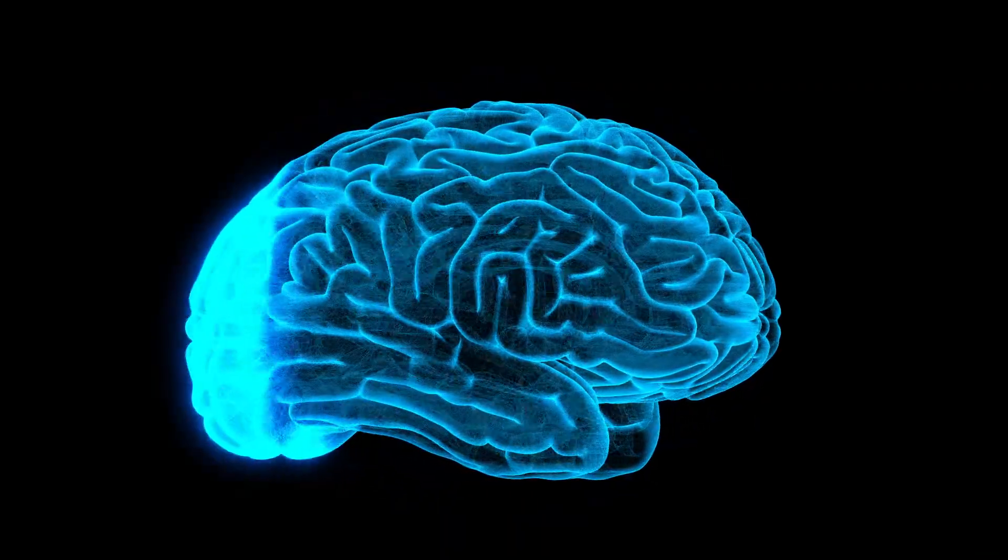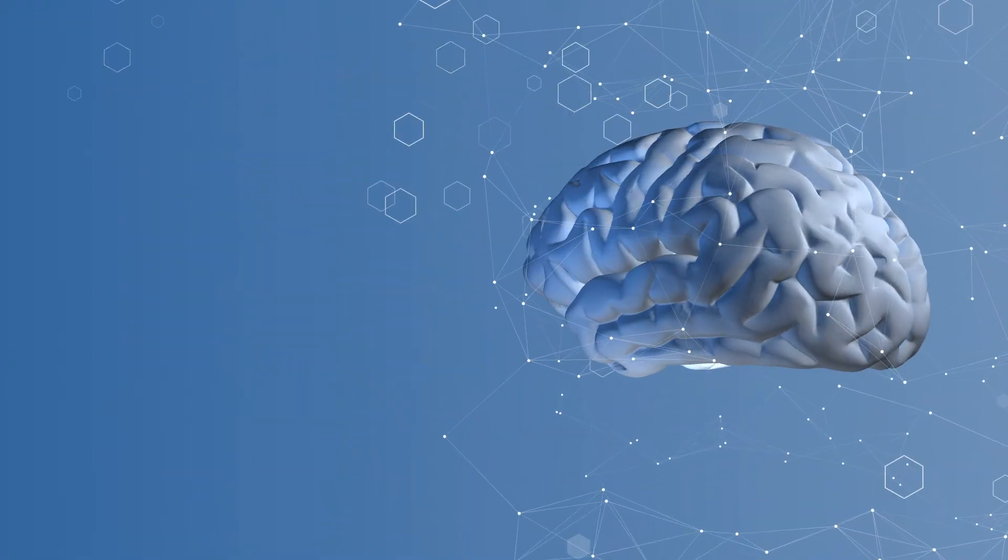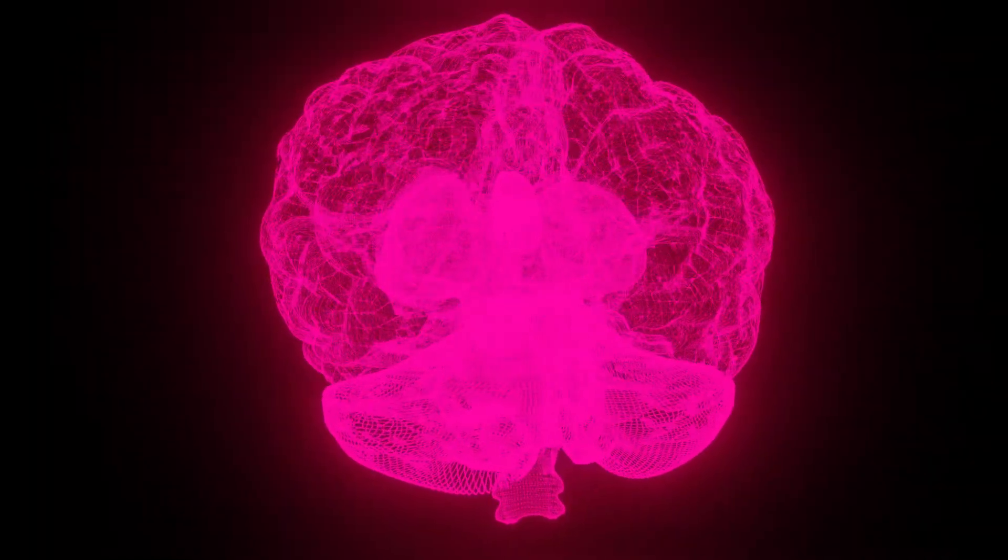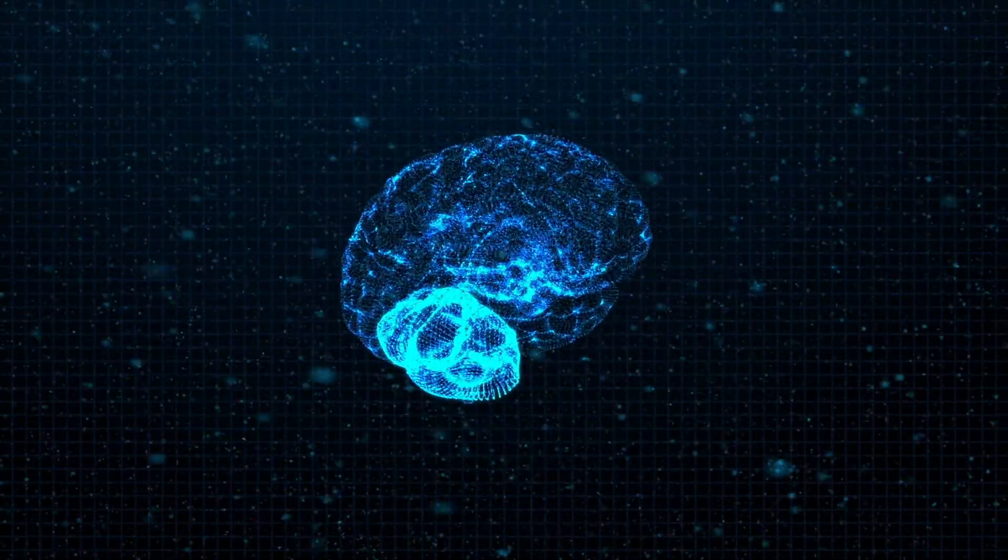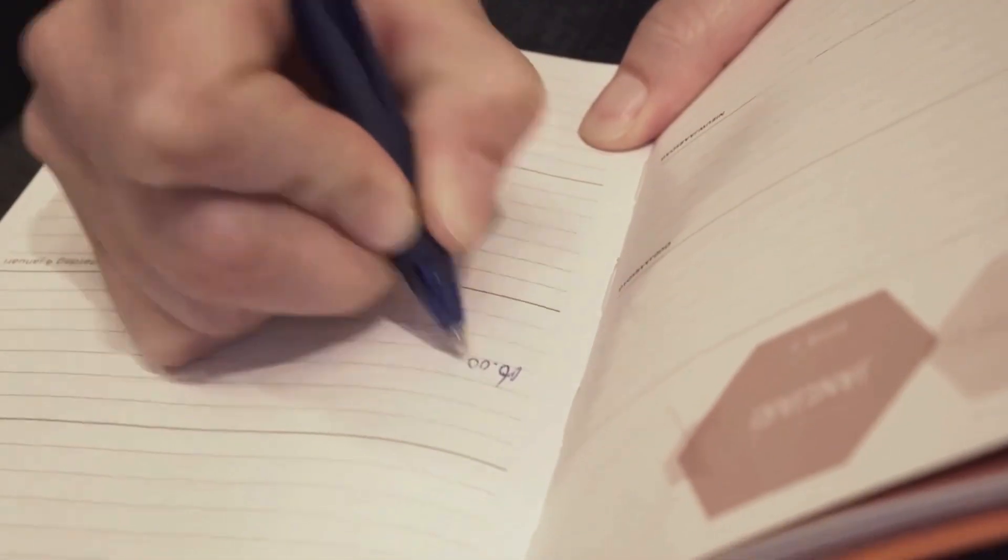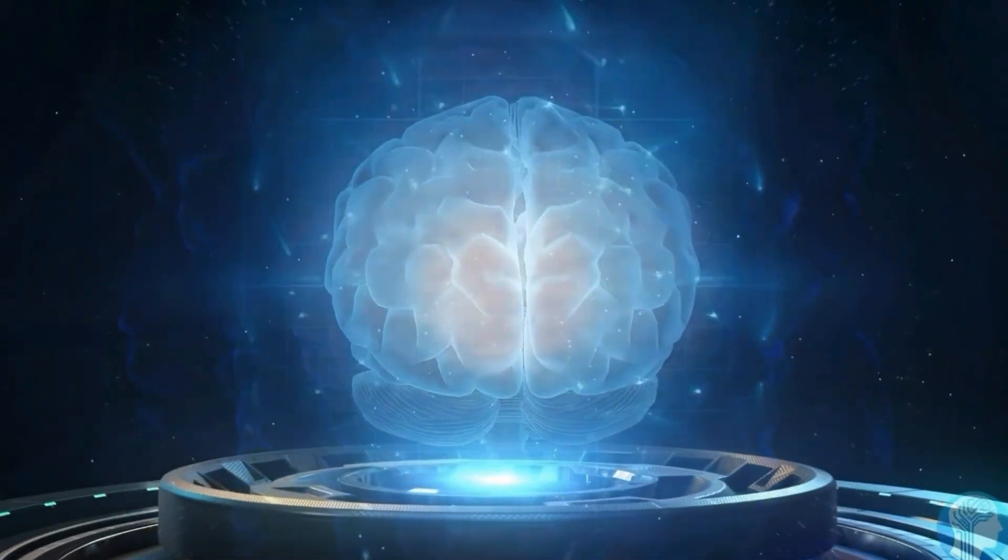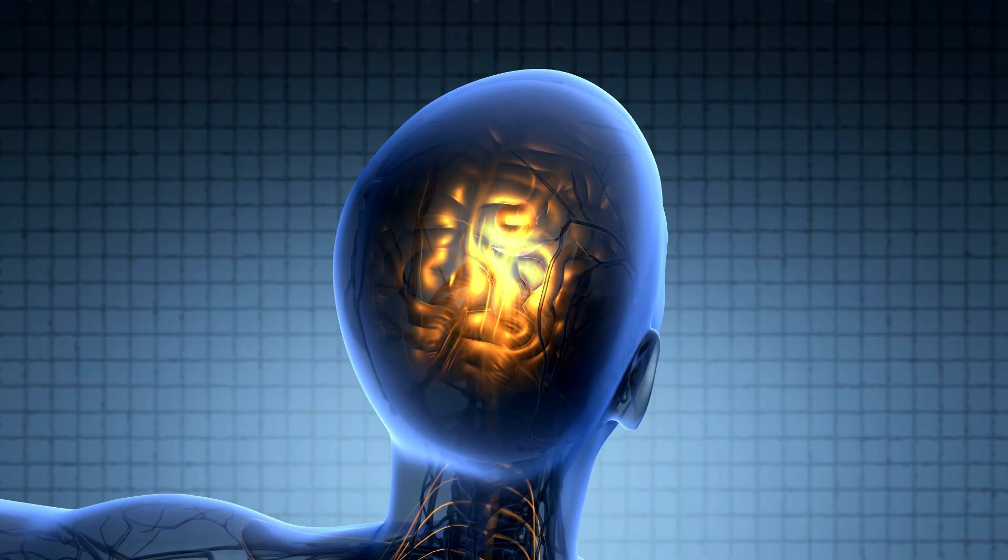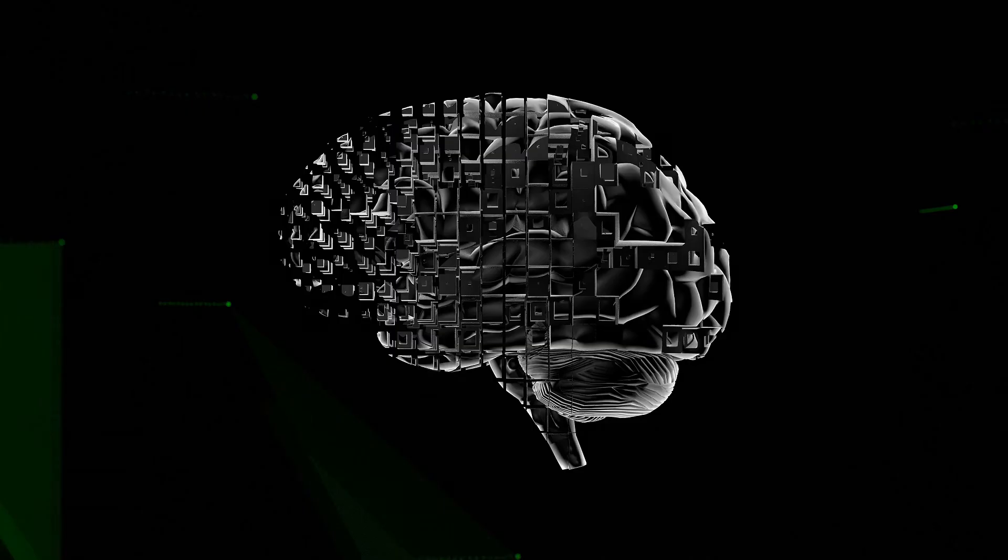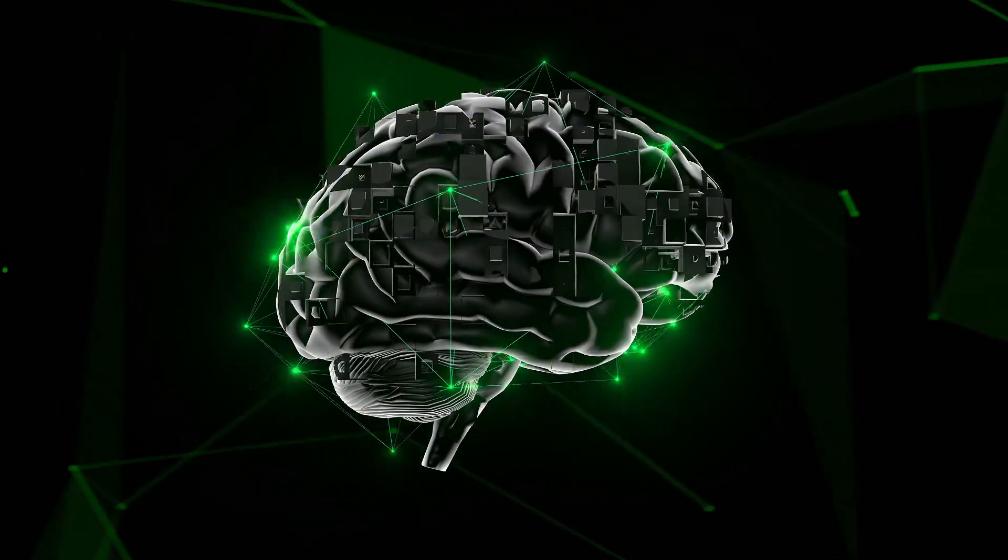So why does your brain jump the gun like that? Easy. It's lazy. But in a genius way. See, your brain burns a ton of energy. Like, just thinking can drain you more than leg day. So instead of processing everything in real time, it cheats. It builds shortcuts, based on context, patterns, and past experience. Let's say someone says, 'I need you to...' Your brain immediately goes, 'Leave? Pay rent? Stop sending memes at 3am?' It's already queuing up every possible ending before the sentence finishes. It's like Google, but with less chill.